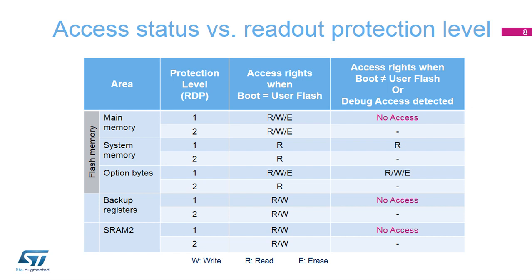The system flash memory can be read-only. The option bytes can be read only when the RDP is set to Level 2. Otherwise, if the device is not configured to boot from the user flash memory, or if a debugger access is detected, then almost all memories are not accessible, except the system flash memory which can only be read in Level 1, and option bytes which can be read or modified in Level 1.